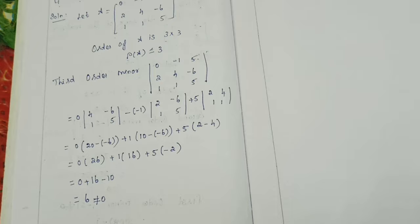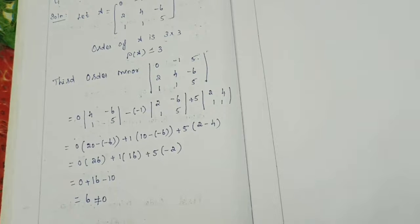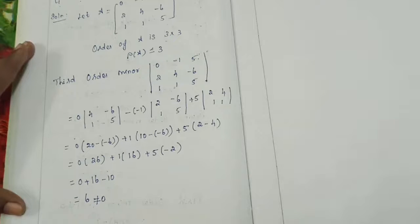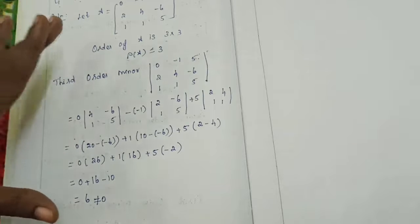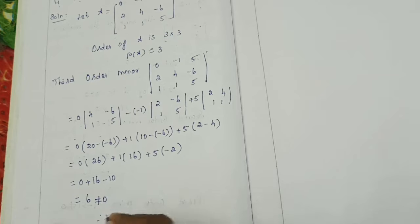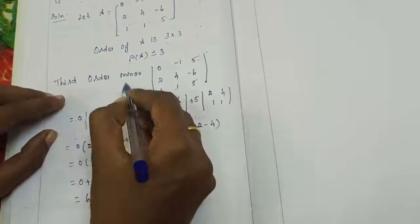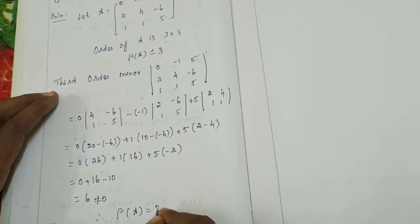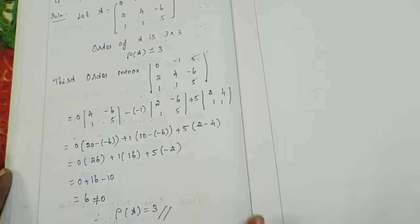We can conclude the answer. If we had gotten 0, we would find the second order minor. If that were also 0, we'd find the first order minor. But here, the third order minor is not equal to 0, so rho of A is equal to 3.